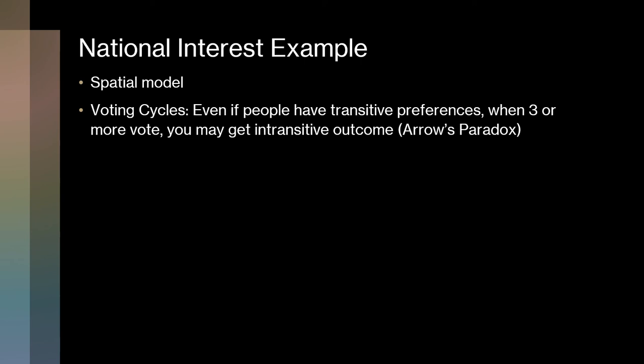This brings out the idea that there can be voting cycles. Kenneth Arrow identified that even with rational voters with transitive preferences in a legislature or decision-making body, you can get intransitive outcomes — a cycle where there isn't necessarily a majority outcome that emerges. That's what he's getting at with national interest: outcomes depend on the interaction and very often the strategic behavior of people. In his next chapter, he'll have an example of how you can manipulate an agenda to control the outcome.